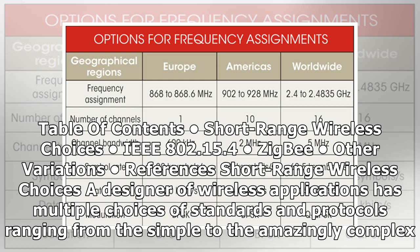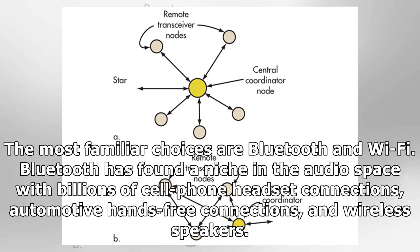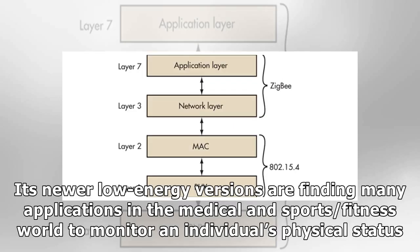The most familiar choices are Bluetooth and Wi-Fi. Bluetooth has found a niche in the audio space with billions of cell phone headset connections, automotive hands-free connections, and wireless speakers. Its newer low-energy versions are finding many applications in the medical and sports fitness world to monitor an individual's physical status.